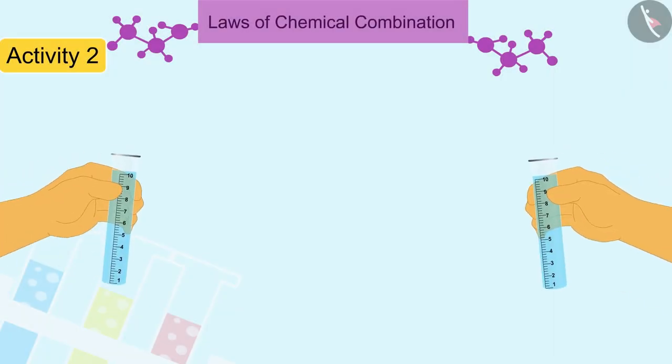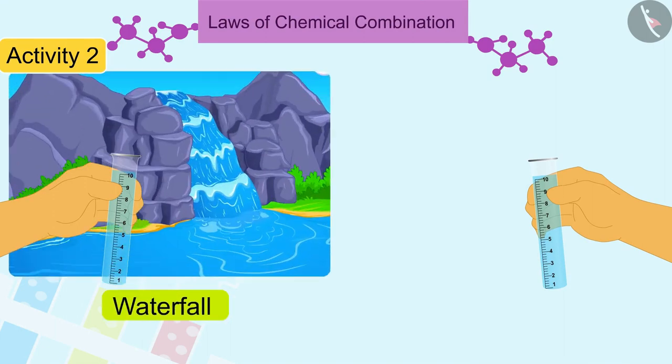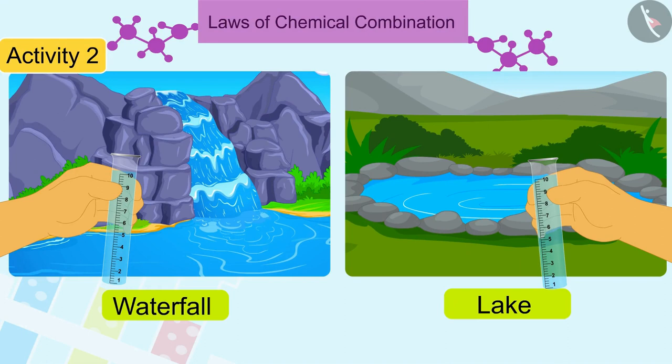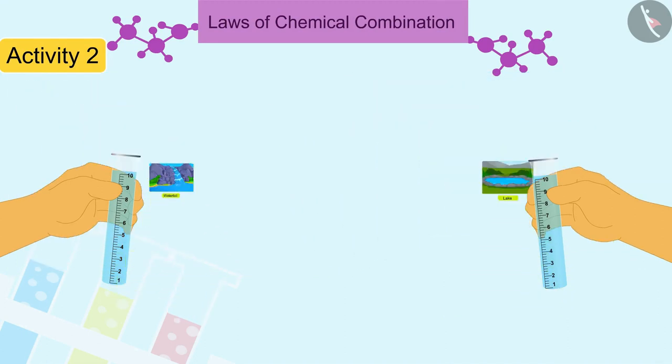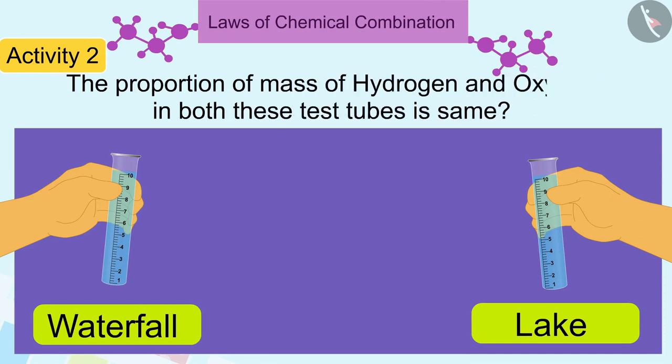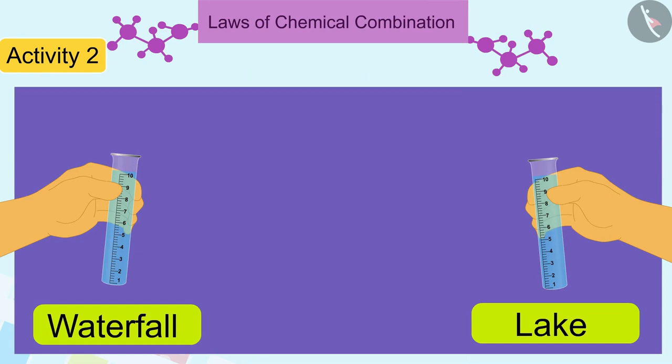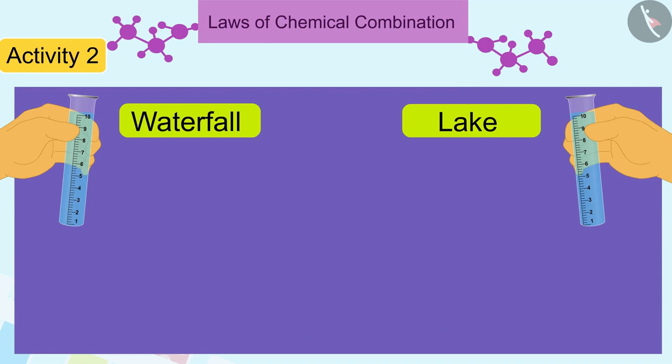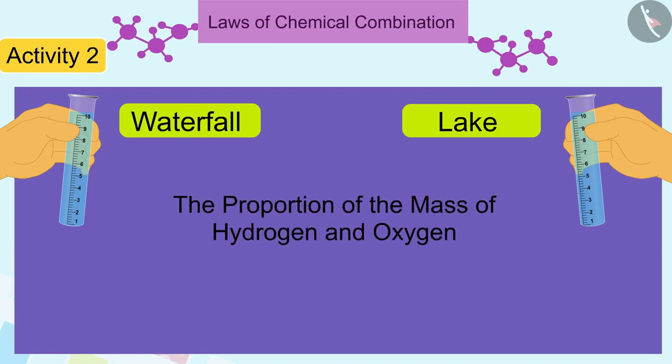If we take 10 ml of water from a waterfall in a test tube and 10 ml of water from a lake in another test tube, can you tell whether the proportion of mass of hydrogen and oxygen in both these test tubes is the same or not? Yes, it is same. You will find that the proportion of the mass of hydrogen and oxygen in the water of both the test tubes is 1 is to 8.